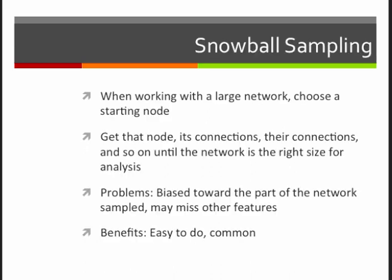Snowball sampling is one really common way people work with social networks when they're trying to build a data set to work with. So when you're working with a large network, you choose a starting node. Sometimes this is called a seed node, and it's just one node that you're going to start with. For that node, you get all of its connections, basically its egocentric network, and then you follow them to all of their connections, so that's a second-degree egocentric network, and so on, and you follow that out until the network is the size that you want to work with.